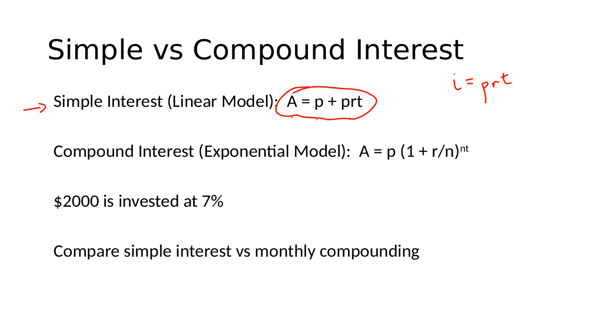And you can see there's nothing in the exponent at all. No variable in the exponent, so this is a linear model. So simple interest is going to follow a linear model.